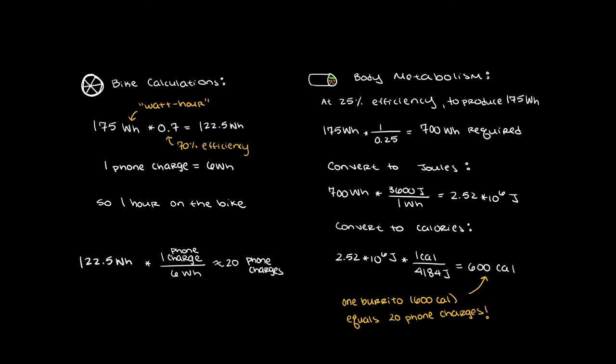Now, in order to produce this energy, our body will need to break down our food so that our muscles can operate correctly. We know that our body is about 25% efficient in converting chemical energy from the food we eat into mechanical kinetic energy.